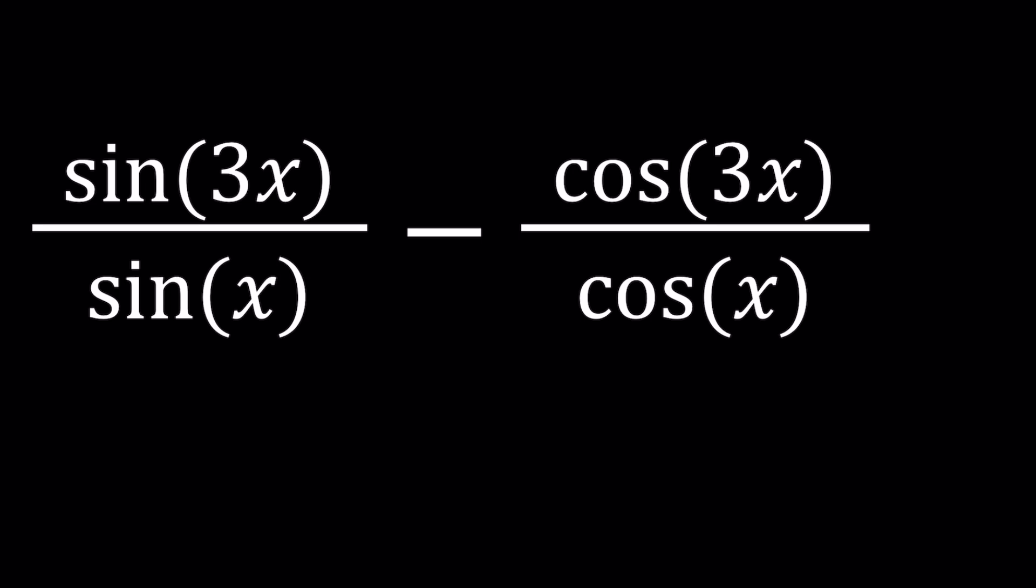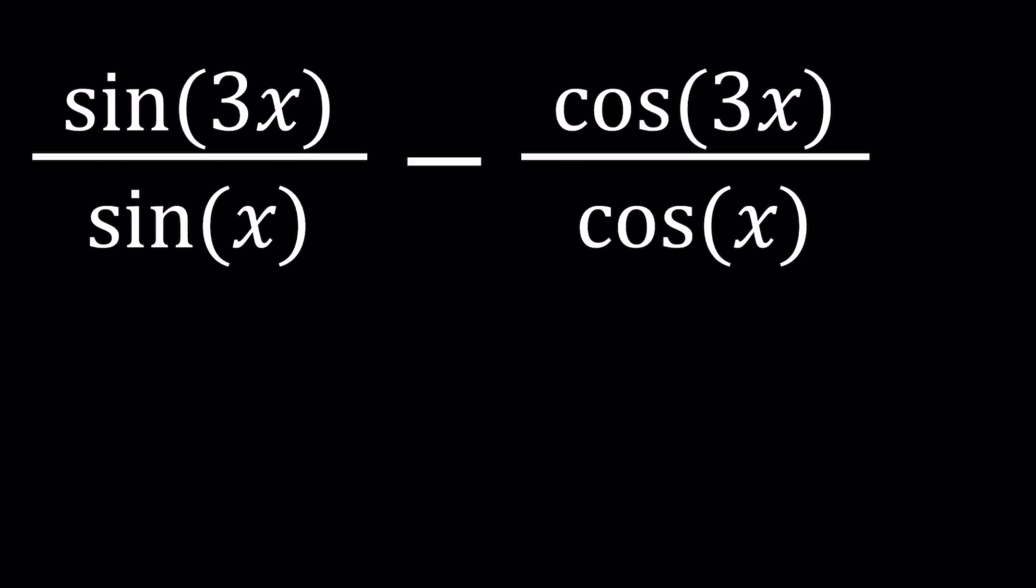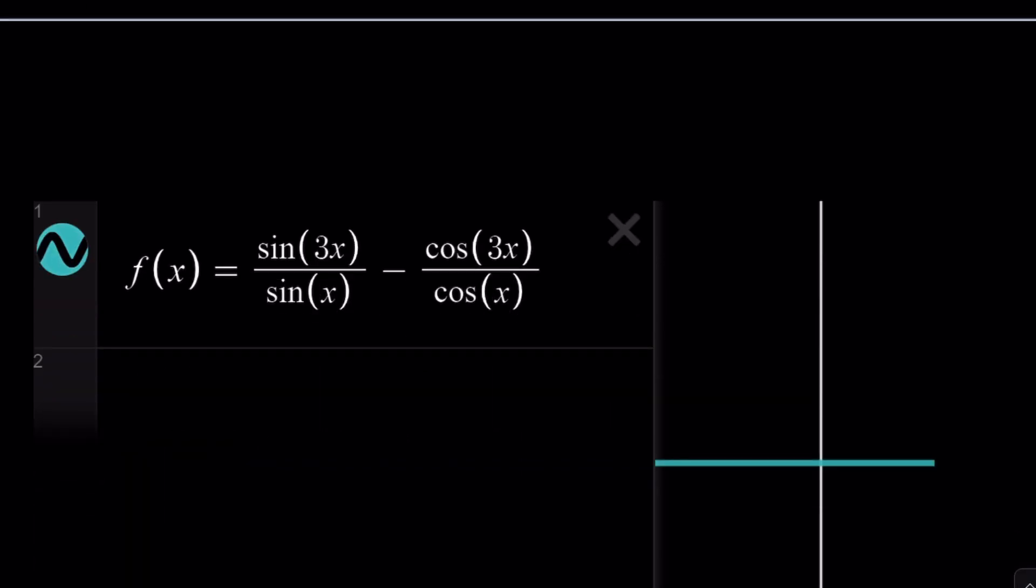First of all, before we start solving the problem, I want to show you a graph of this as a function. Why? You'll see in a little bit. Wow, f of x is kind of like a straight line. Why is that happening? That just means that we have a constant function.